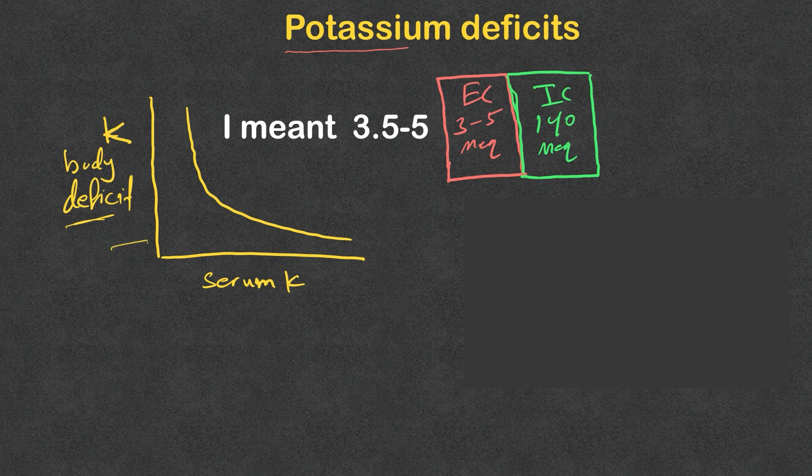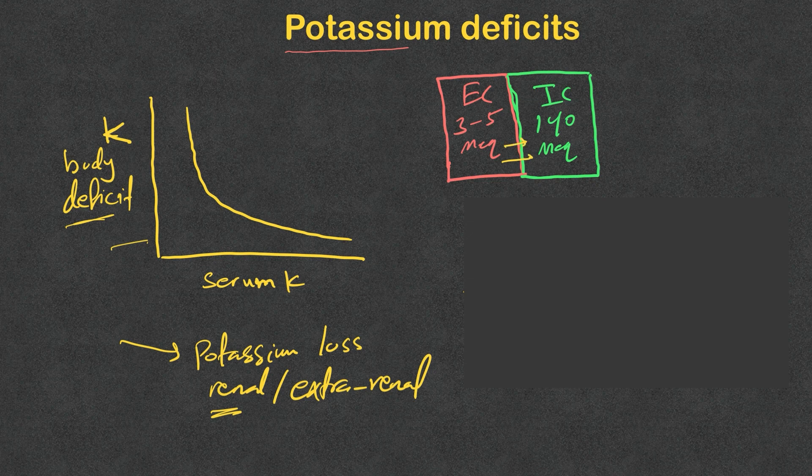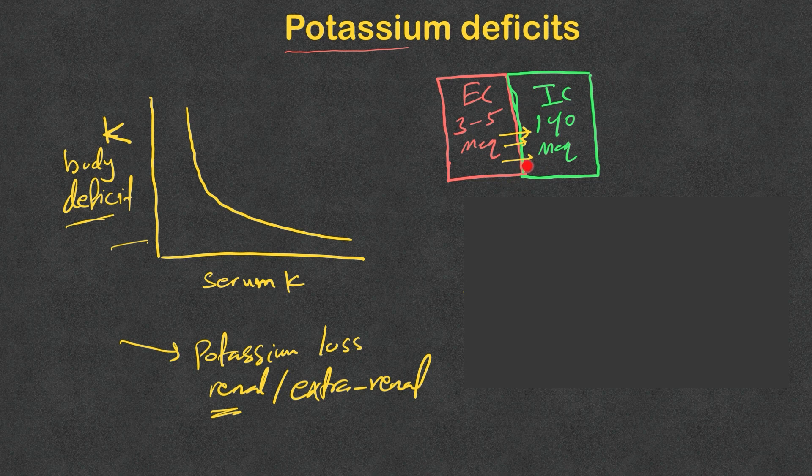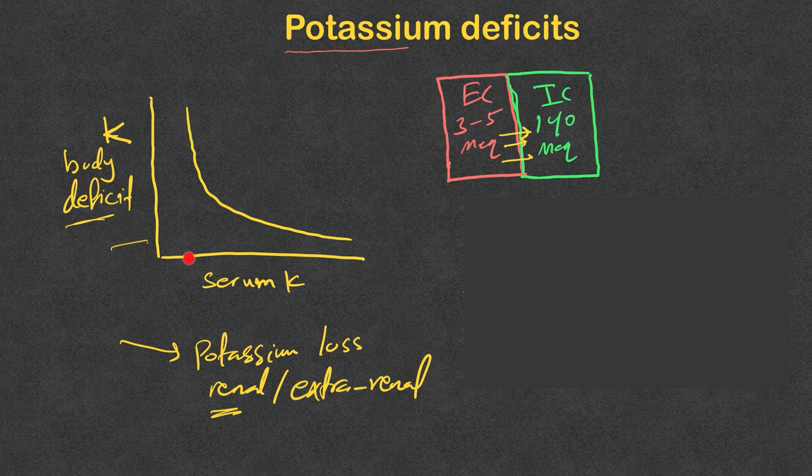It's very important that all this talk about the body deficits applies to hypokalemia that is related to potassium loss, whether renal or extra-renal. It does not apply if the hypokalemia is related to shifting from extracellular to intracellular, or what we call redistribution. Because in shifting or redistribution, the total body potassium is the same, there is no deficit. That's very important when we replete potassium in those patients. We need to be very careful with close monitoring of their potassium level.